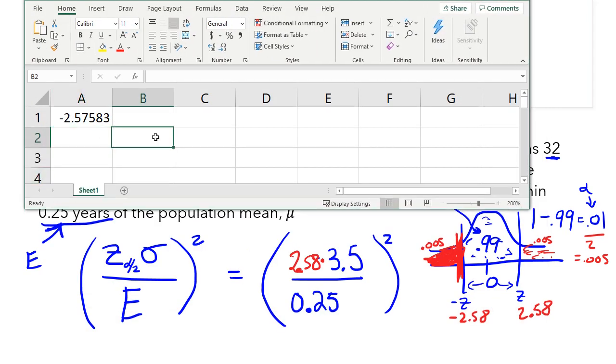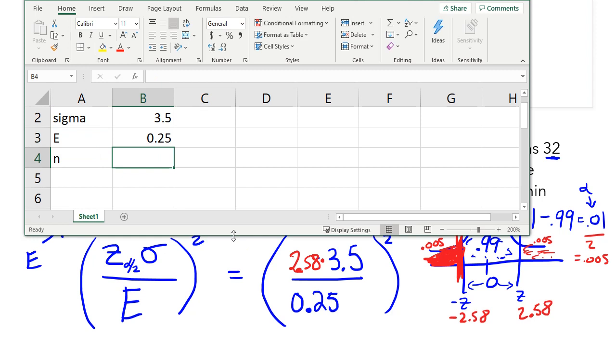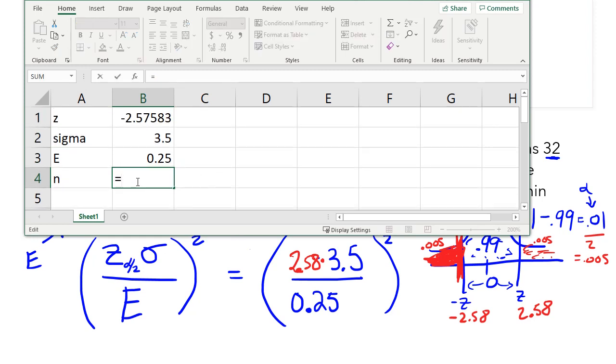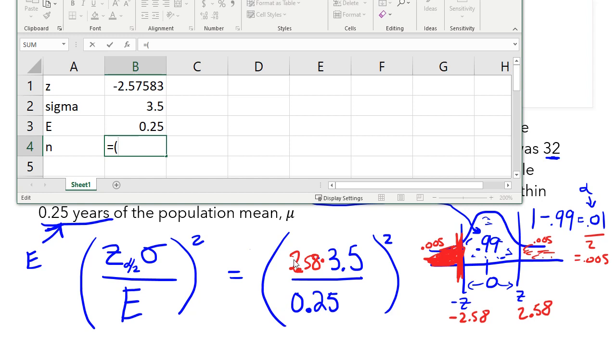So, let me actually move this over. I'm going to write this as z. Sigma is 3.5 and e is 0.25. Okay? So, my sample size, n, type in equals. Let me scroll up so you can see everything. Okay? Equals open parenthesis. That is this first open parenthesis here. Right? And then write 2.58. Instead of typing that in, just click on that cell that has z. All right? Let me change the sign of that z, actually. Let me change the sign. So, it has to be the opposite sign. So, make it negative. Okay. All right. So, click the cell that has z.